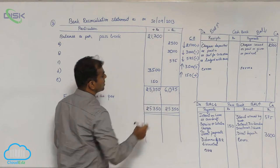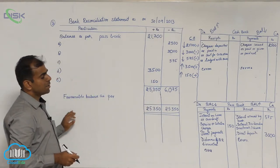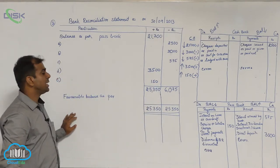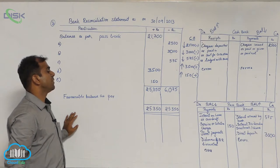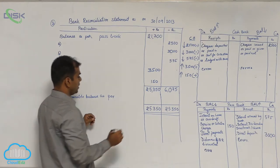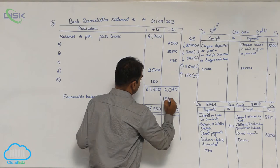So from this, remove 6075. So it comes to 19,275. So we will write 19,275.